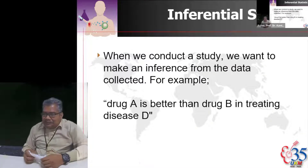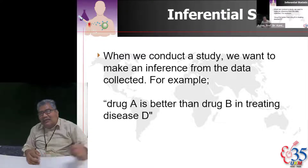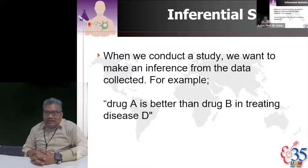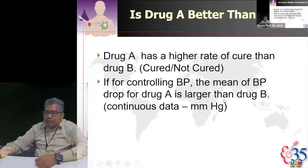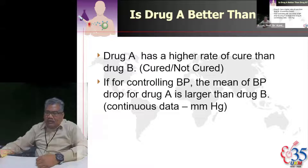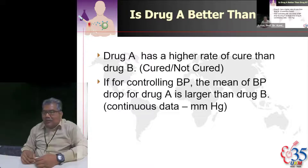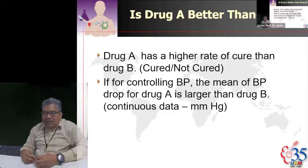When you conduct a study, you want to make an inference from the data collected. For example, drug A is better than drug B in treating disease D. For drug A to be better than drug B, drug A should have a higher cure rate. If controlling blood pressure, the mean BP drop for drug A should be larger than drug B.